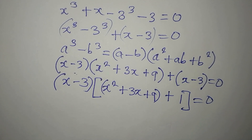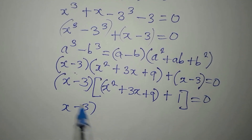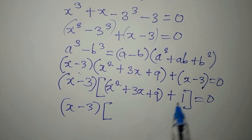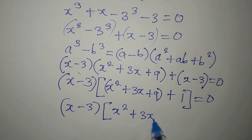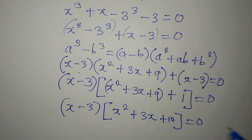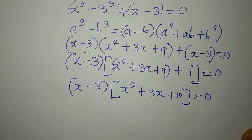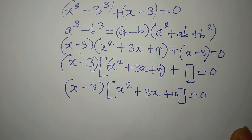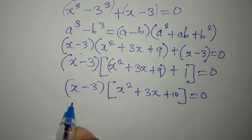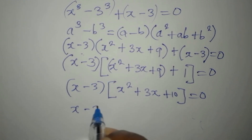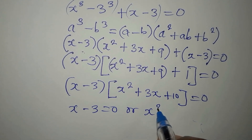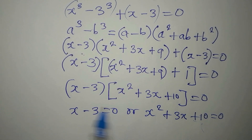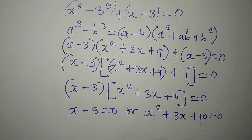So we have (x - 3), and opening the bracket and adding 9 + 1 gives us x² + 3x + 10, equal to 0. We now have two terms multiplied together equaling zero, so either one or both equal zero.